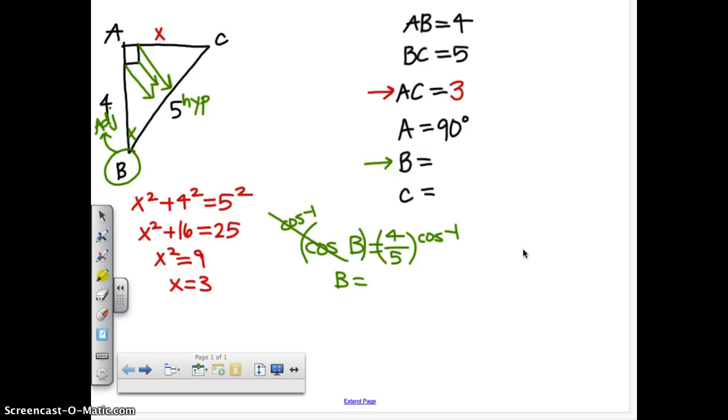And cosine inverse of 4 fifths is 36.86989765, right? So we're going to round that. Now, today, you round all of your angles to the nearest degree, the nearest whole number degree. So yes, it's 36.86989, but I'm just going to round it to 37 degrees.